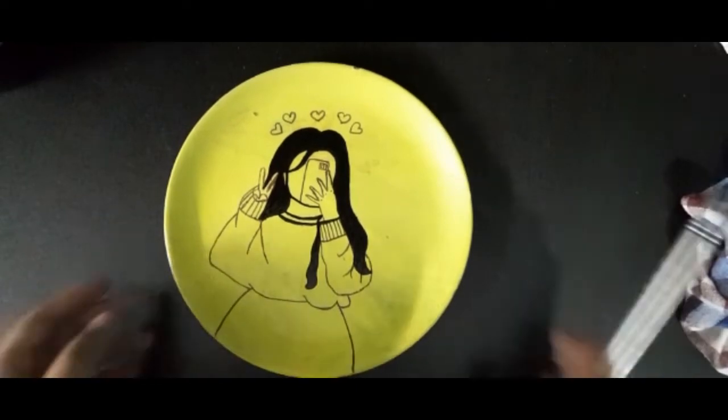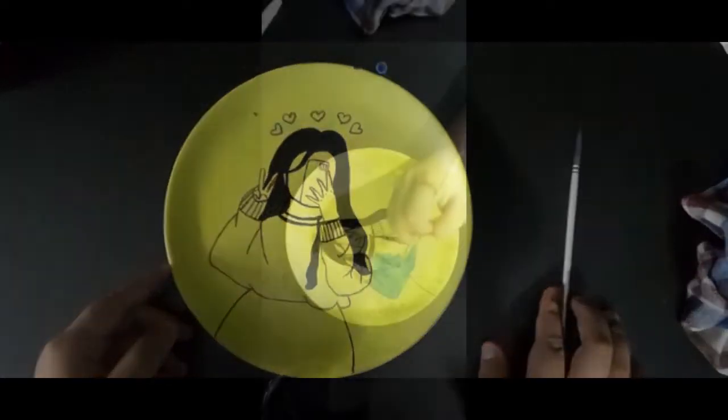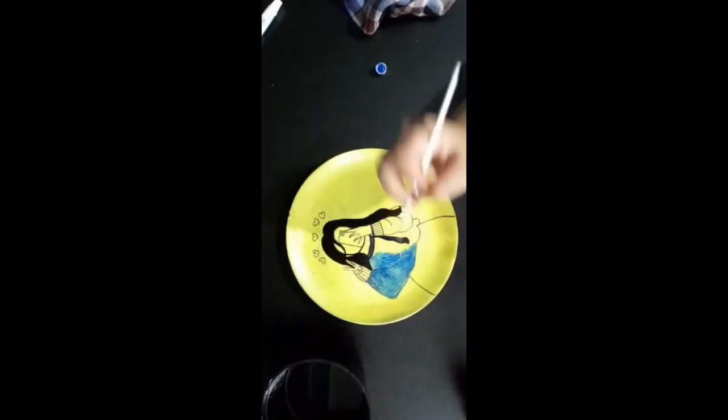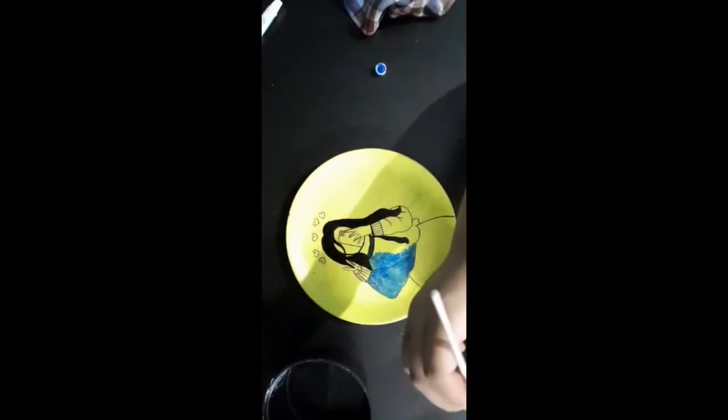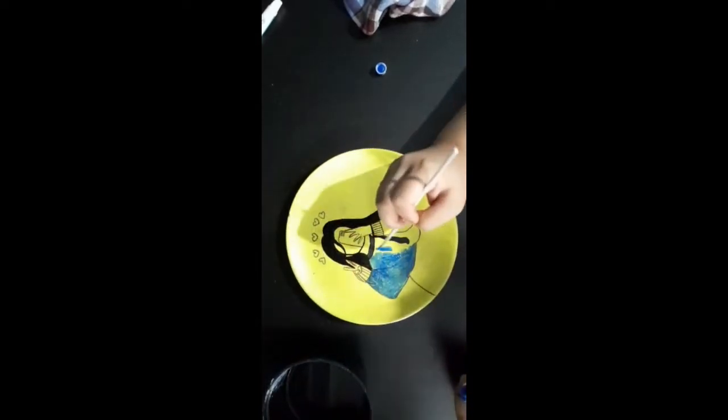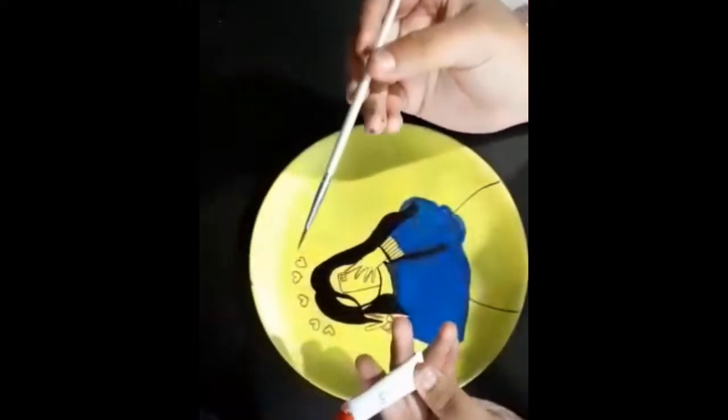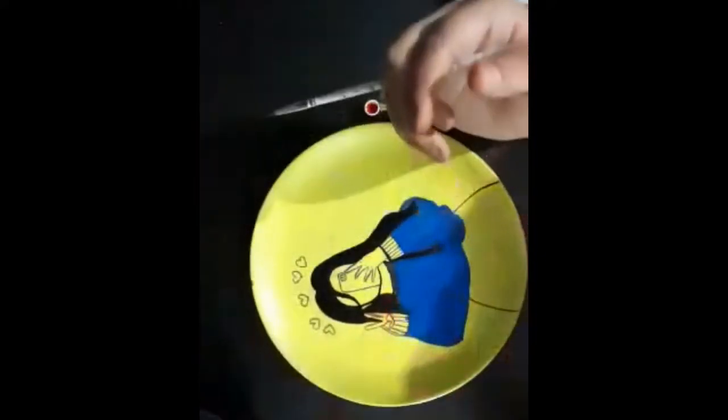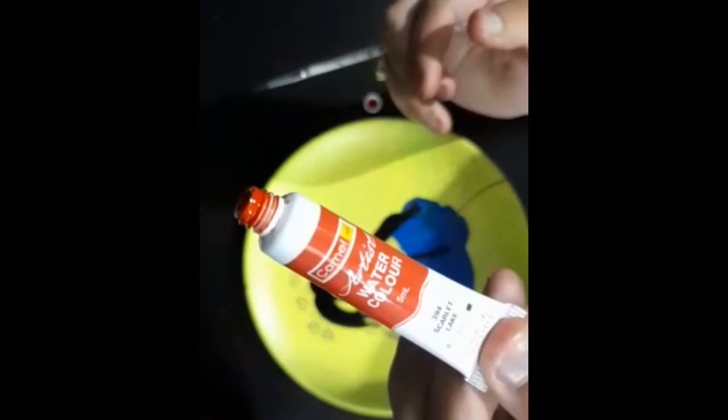The hair is completely done. Now I'm using blue artist watercolor for the sweater part. The blue is nicely done, and now I'm using crimson lake artist watercolor for the skirt.